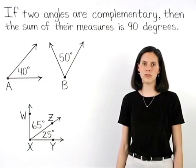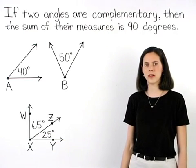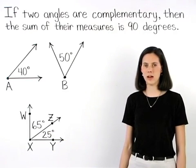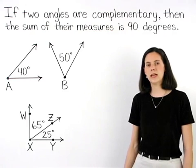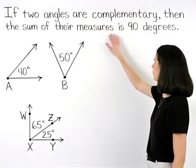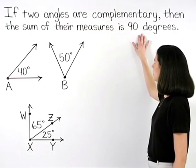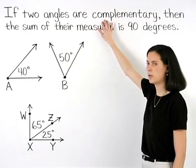Note that the definition of complementary angles can also be stated the other way around. If the sum of the measures of two angles is 90 degrees, then the angles are complementary.